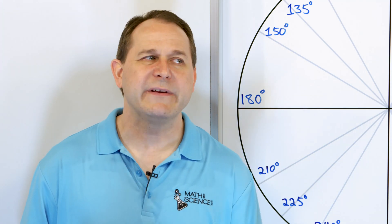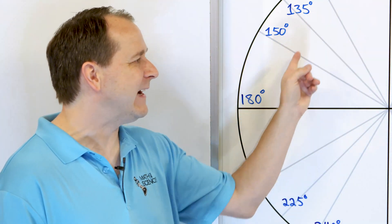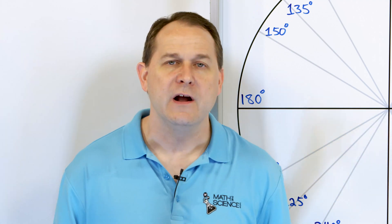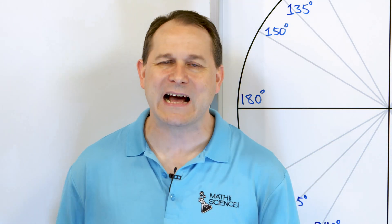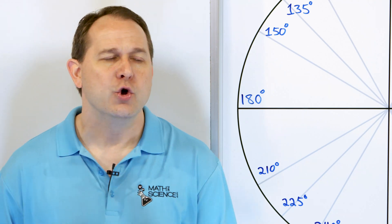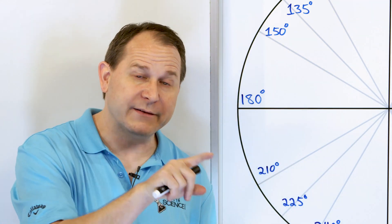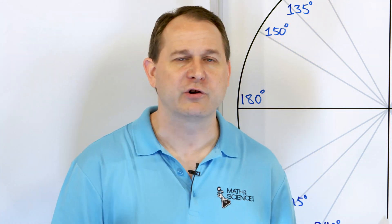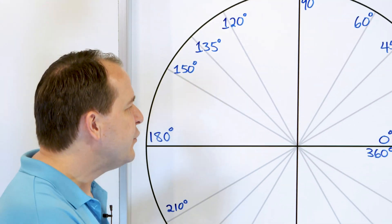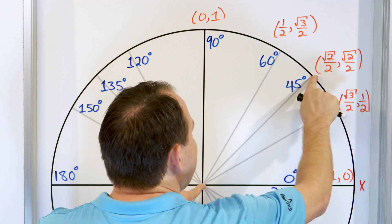But when we start talking about different parts of the unit circle outside of quadrant one, we have other signs that pop up. Originally, when we defined sine and cosine, we drew triangles, which were positive numbers pretty much in quadrant one. You can think of this triangle here as being in quadrant one.